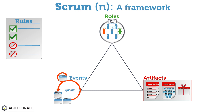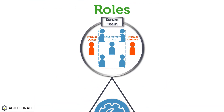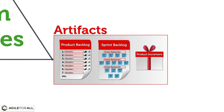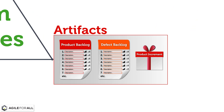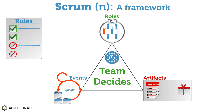The Scrum team decides which processes and techniques to use within the framework. If the team or the organization were to decide to remove or alter any of the components or their rules, they are no longer using Scrum. Scrum exists only in its entirety, and each of the core components and their associated rules serves a specific purpose.